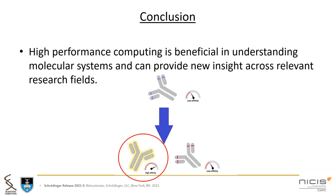In conclusion, the power of high-performance computing is greatly beneficial in investigating and understanding complex molecular systems such as antibody complexes. This can be used to provide useful insight across multiple relevant research fields, for example, drug design and genetics.